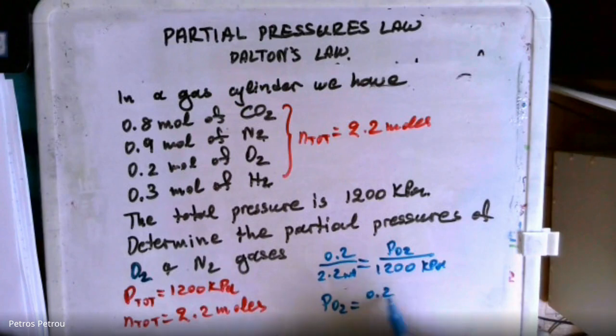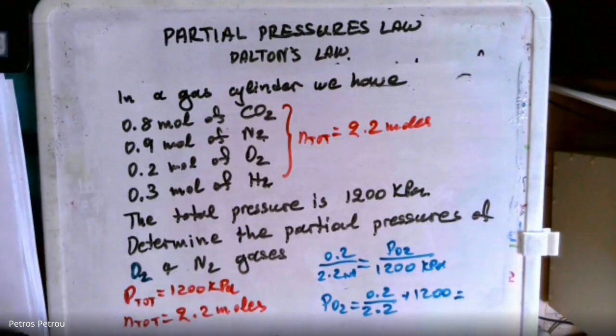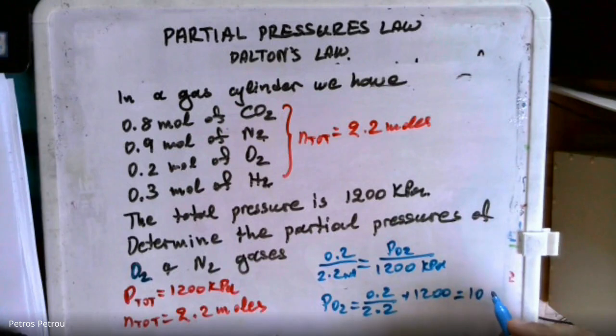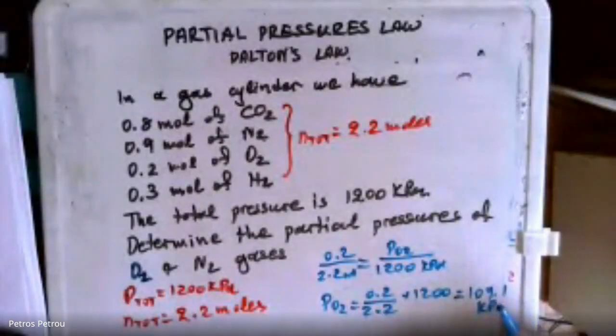And I prefer to put it this way because that is essentially the portion of the moles, times the 1,200. So this will give you 0.2 times 1,200 divided by 2.2. So we get 109.1 kilopascals.